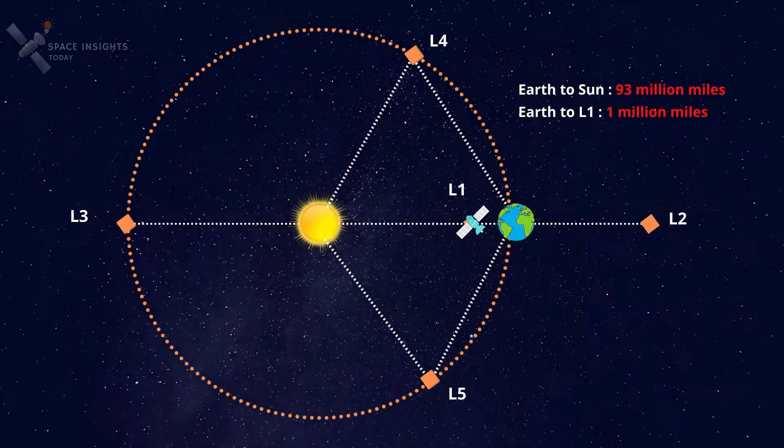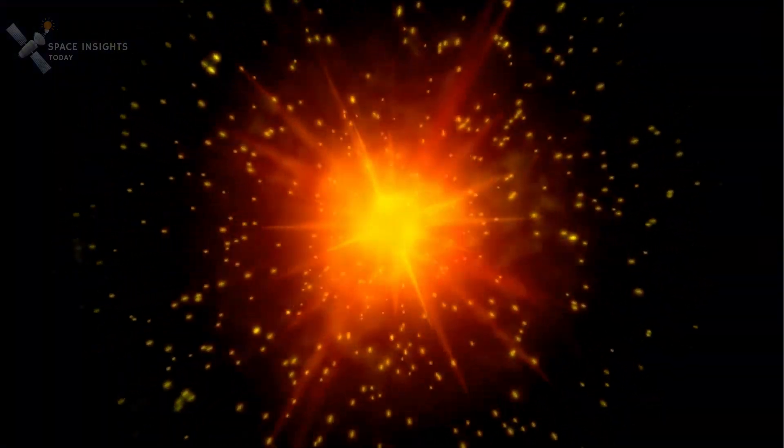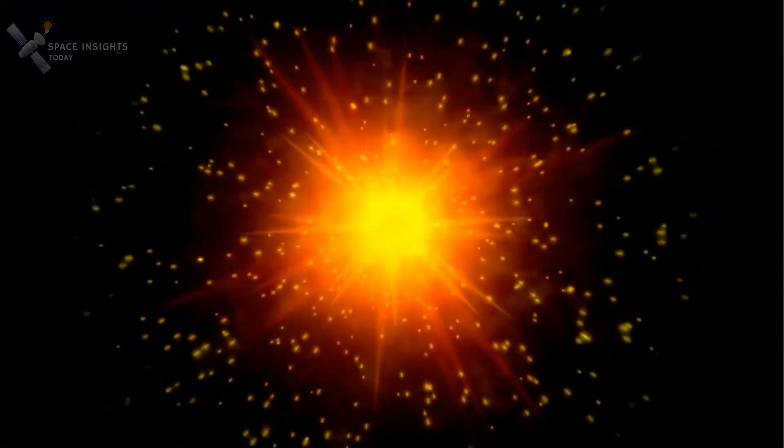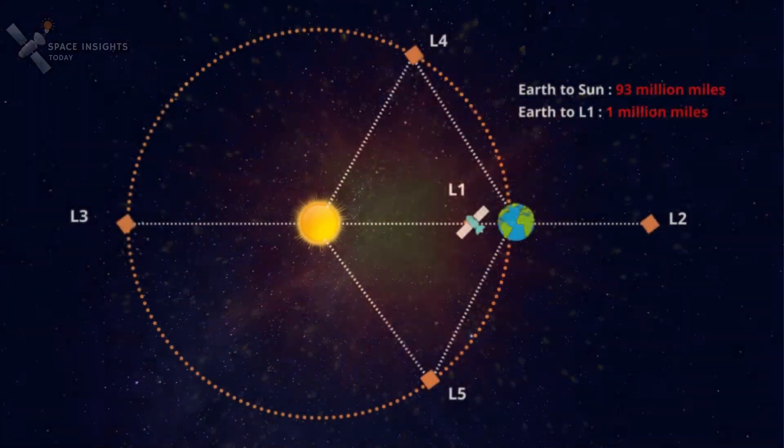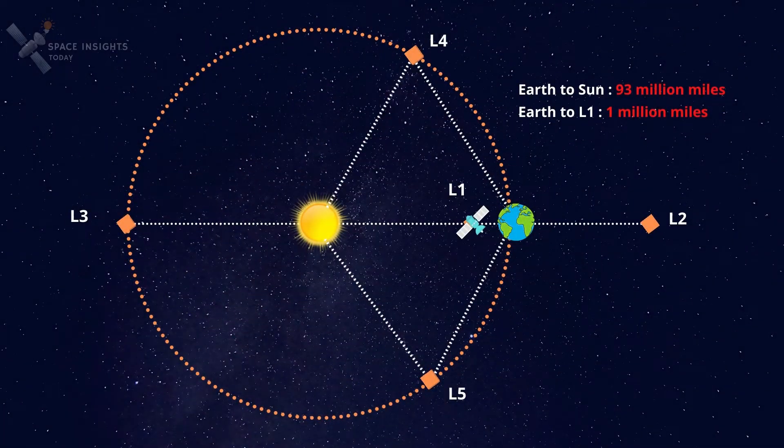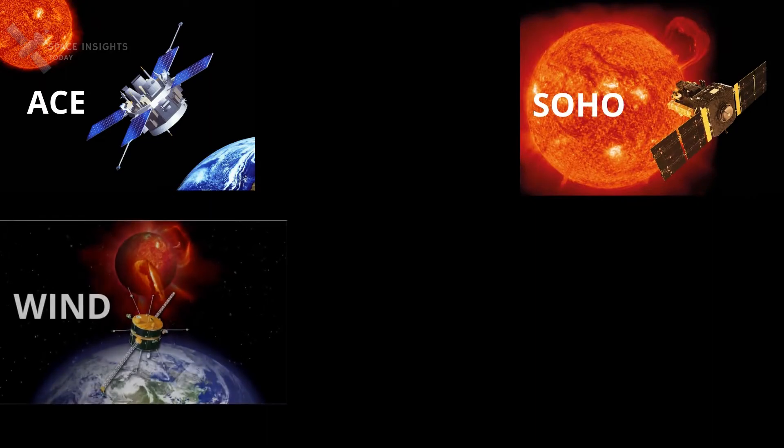L1 is a good position for spacecraft to monitor the Sun as it can capture advanced solar measurements and early warnings of potentially dangerous space weather events, at least an hour before it reaches Earth. Some of the solar weather monitoring and science observation missions at L1 include ACE, SOHO, WIND, SCOVR and few more.